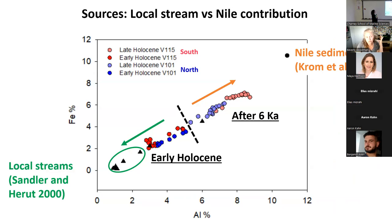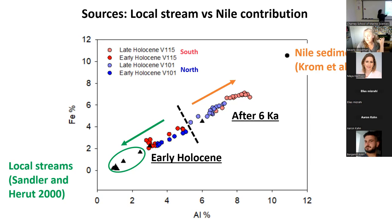When we look at local streams versus Nile contribution, plotting iron percentage versus alumina percentage, it is very clear: in both the north and south cores, samples after 6,000 years ago fall along one mixing line, while samples before 6,000 years represent local streams. There is a very clear-cut transition at about 6,000 years ago — before that in the early Holocene we mostly see local stream signatures; after 6,000 years we see the Nile basaltic sediment signature.